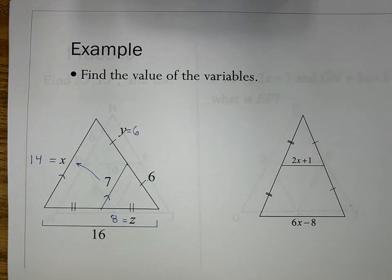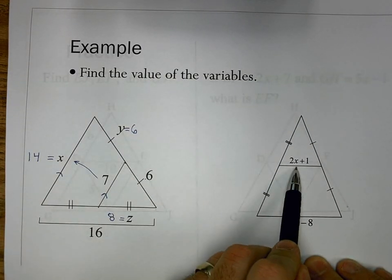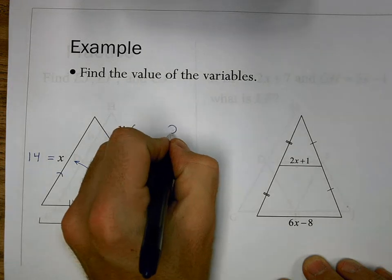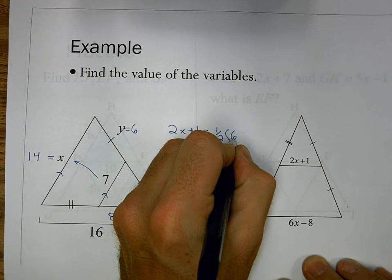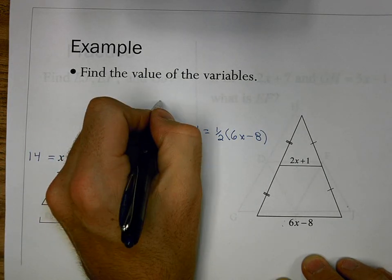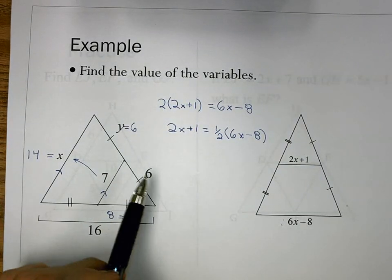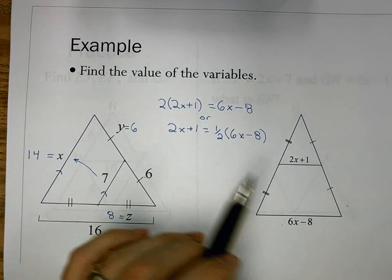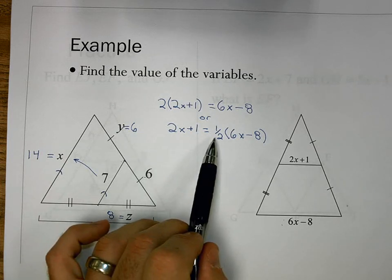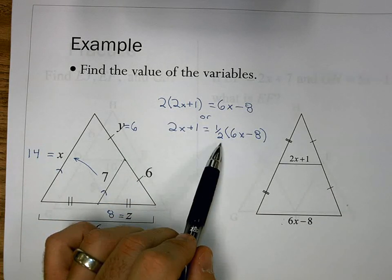Then we go to a more complex problem where we need to solve for X. We do not set the two expressions equal to each other, because they are not equal to each other. The expression 2X plus 1 is a mid-segment, so by our rule we know that it's half the whole side. We could say 2X plus 1 equals one-half times (6X minus 8). If we don't like fractions, we could double the mid-segment side: 2 times (2X plus 1) equals 6X minus 8. Either equation can be used to solve.